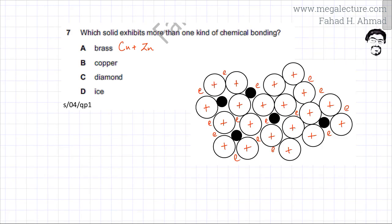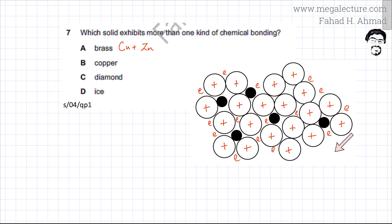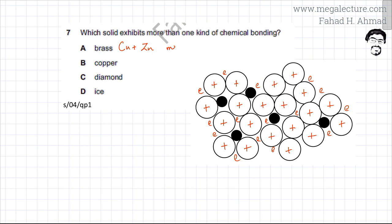The structure of brass has copper and zinc ions of different sizes, creating an irregular metallic lattice. The smaller atoms are zinc ions and the bigger ones are copper ions. Even so, the positive ions are attracted by delocalized electrons, so there is only one type of force — metallic bonds. Even as an alloy, metallic bonds are the only force of attraction present.